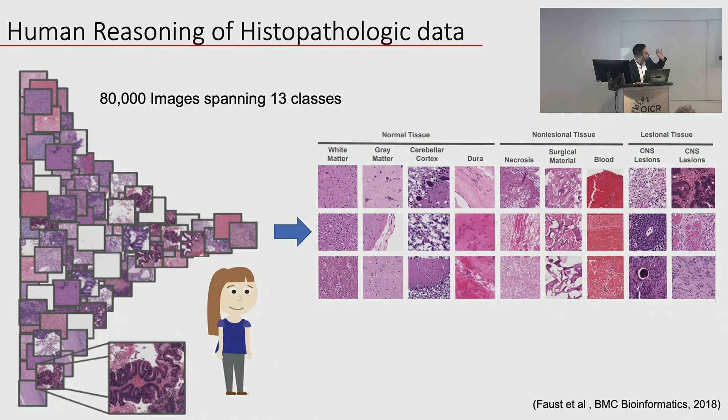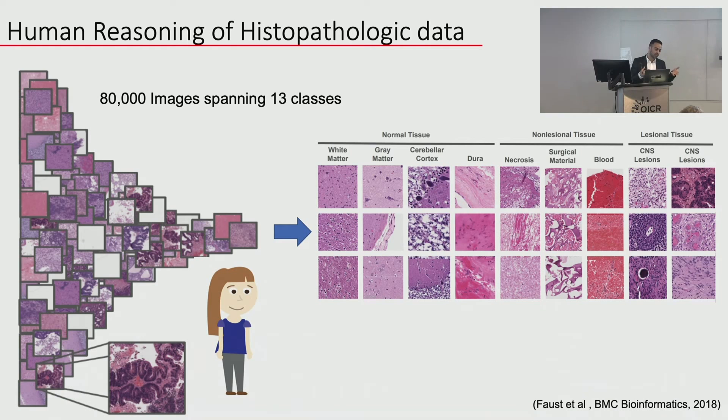Our first approach was unsupervised. We took 80,000 tiles spanning about 100 cases and grouped them into 13 different classes: normal brain tissue — white matter, gray matter, cerebellar tissue, dura — and on the other extreme, pathological tissues like lymphomas and gliomas. In between is non-diagnostic material: blood, cloth incorporated into tissue. If you polled 100 pathologists, this is how they're taught: normal, abnormal, non-diagnostic.